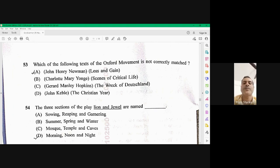Question number 54, the three sections of the play lion and the jewel are named as morning, noon and night. D is the right option. 54 is D.